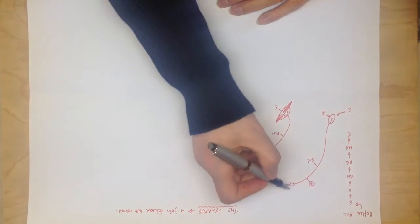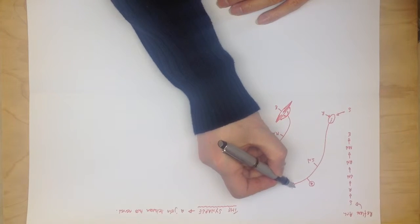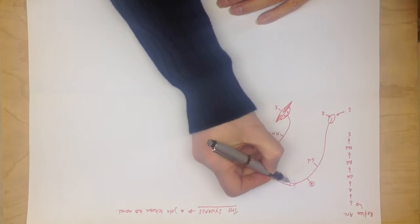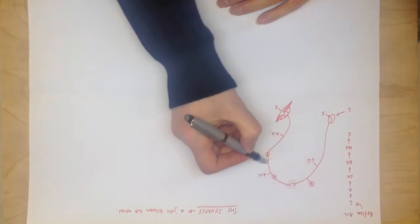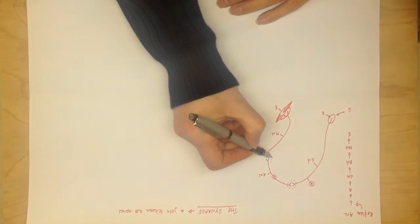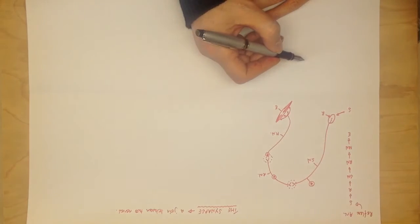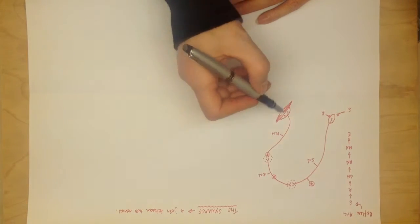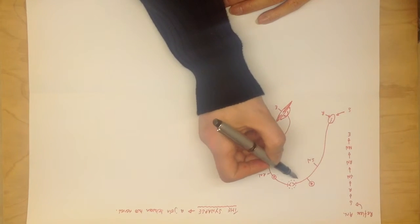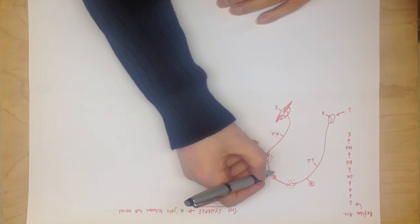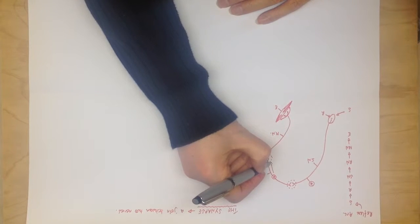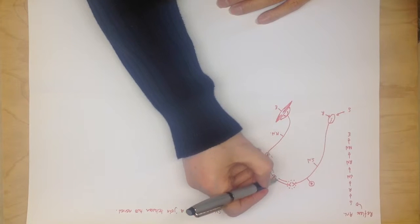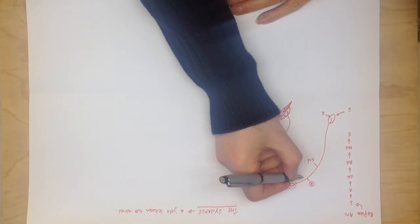Now, the synapse is the word used to describe these areas here, where the ends of two nerves join together. Now, if you remember, if the impulse is leading away from the cell body, or towards the cell body, it's got different names.